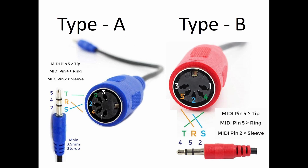When you go to buy an adapter, recognize that there are two different styles: Type A and Type B, and they're not compatible. The difference is that the wiring configuration from the tip, ring, and sleeve of the TRS connector routes out to different pins on the 5-pin DIN connectors.